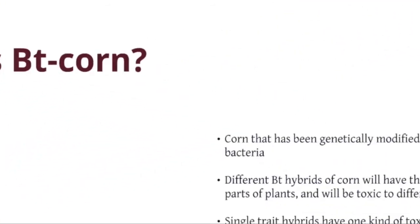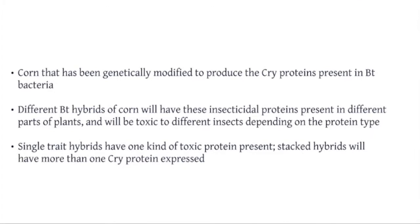BT corn is corn that has been genetically modified to produce these cry or other BT-derived proteins that are toxic to insects. Different BT corn hybrids will have these insecticidal proteins present in different parts of the plants and will be toxic to different insects depending on the particular protein type. For example, BT corn with traits for corn rootworms expresses these cry proteins in the roots. These BT hybrids are sometimes referred to as single or stacked trait hybrids depending on how many BT proteins are present.